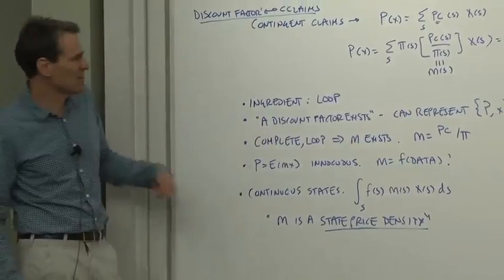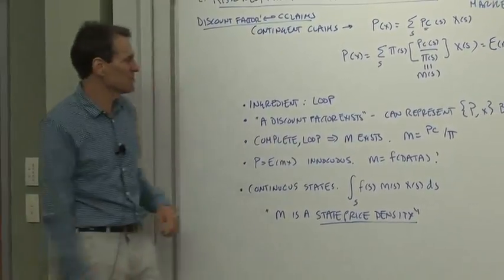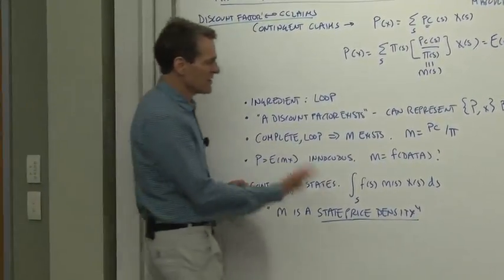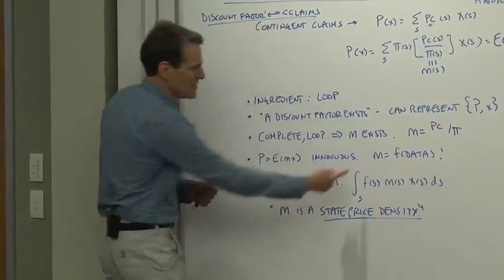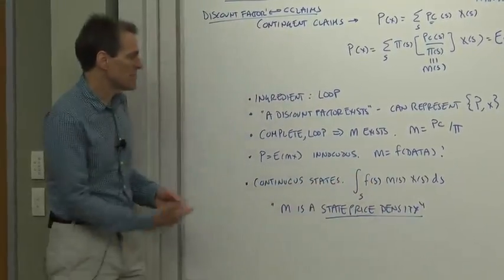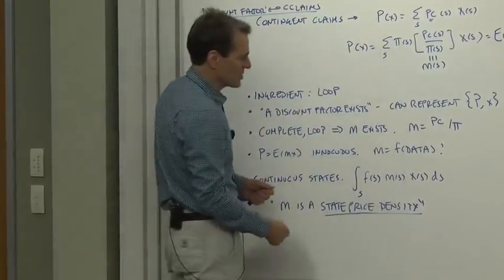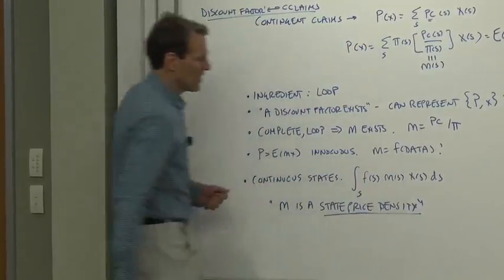When we do this with continuous states, not just discrete 1, 2, 3, 4, 5, this is especially important because when you integrate over states, you need some measure. So in fact, typically we don't use raw contingent claims prices. We multiply and divide by probabilities.